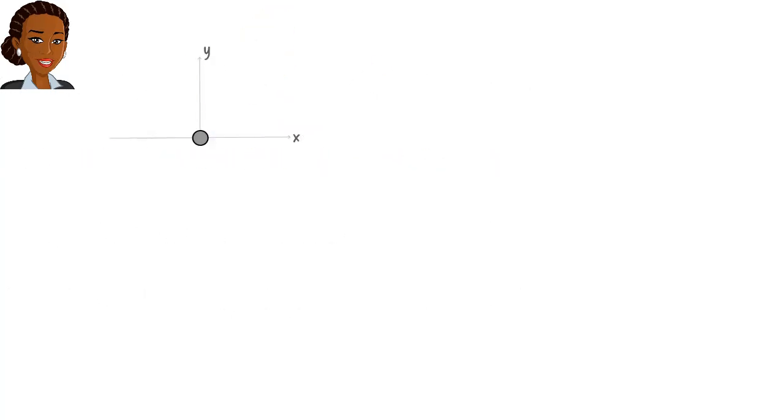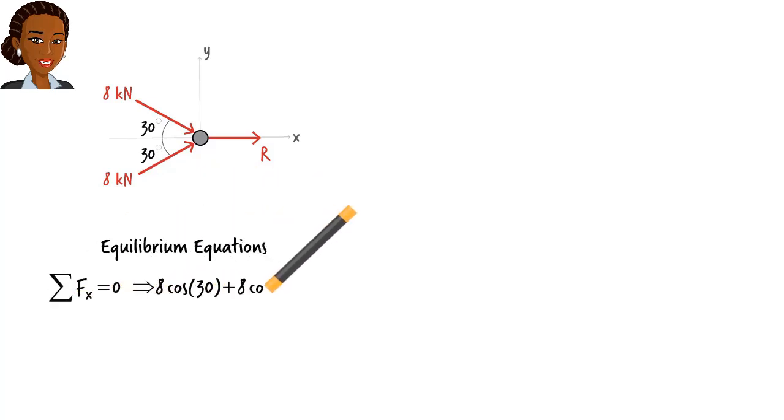Now consider this particle. It is subjected to three forces. We know the magnitude and direction of two of them, but the magnitude of this force is unknown. We wish to determine r, such that the particle remains in equilibrium. Since two of the forces have both x and y components, we need to write both equilibrium equations. The net force in x direction must be zero, and the net force in y direction must be zero. Since r appears in the first equation only, if we solve it for the unknown, we get...